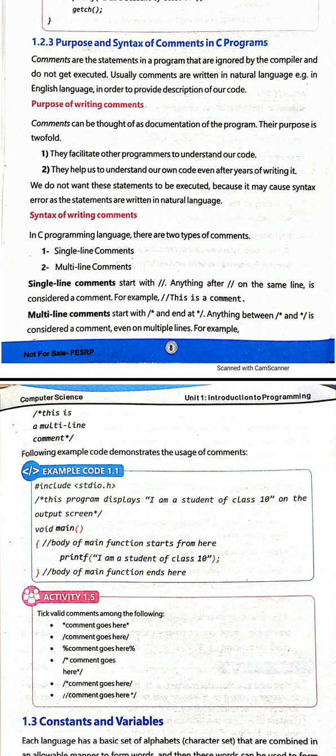Single-line comments have only one line, while multi-line comments span more than one line — used to explain what function is being performed at a certain place. For single-line comments, we use a double slash. Start with double slash, and after it write anything — that is your comment explaining what function is performed there.